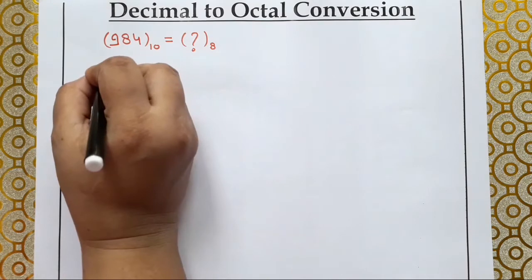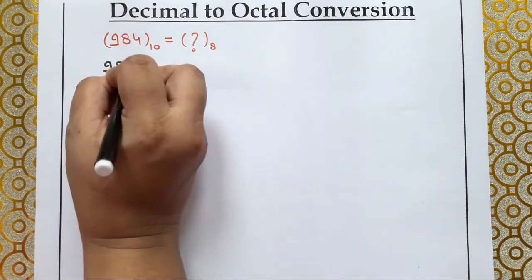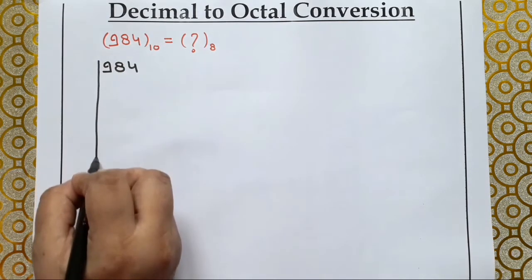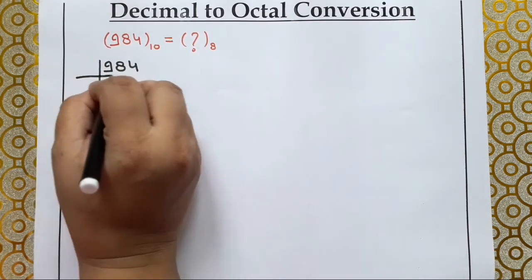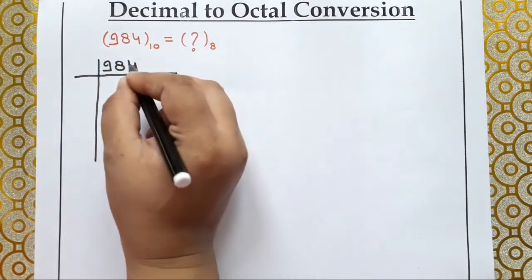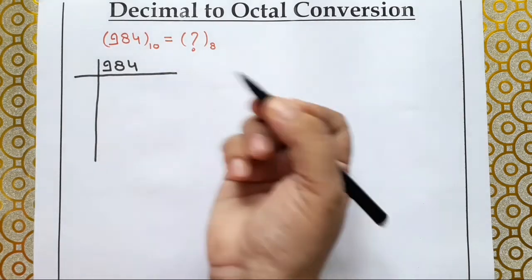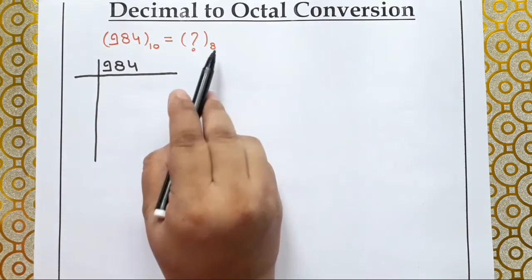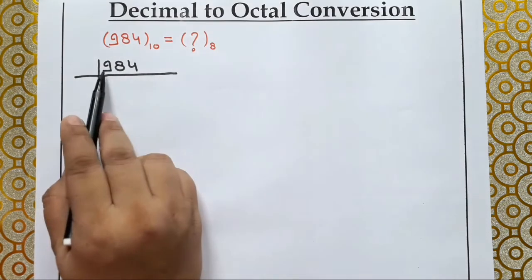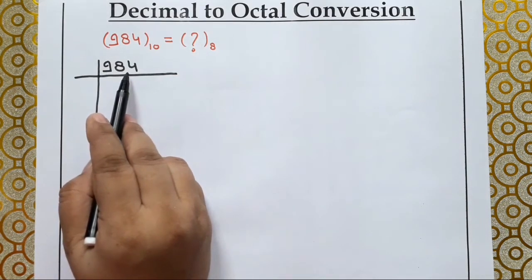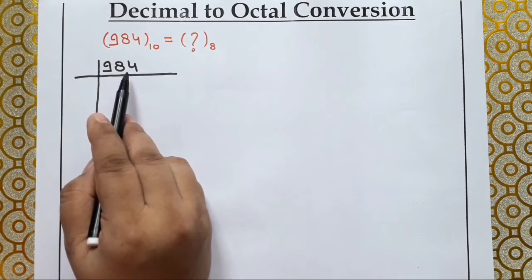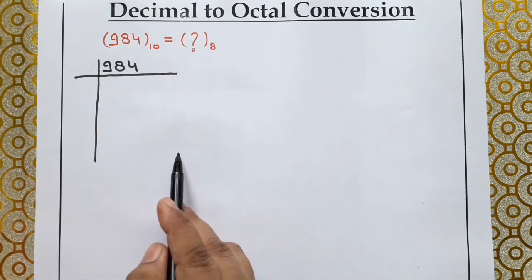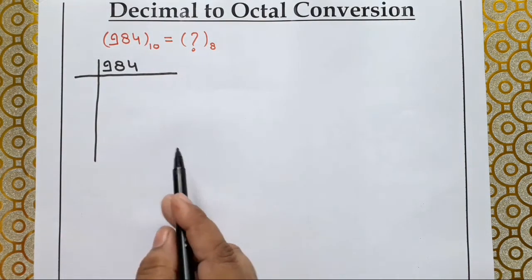Let's see how to find it out. The method is the same as what we used for decimal to binary conversion. We start by dividing the number. Since we know that the base of the octal number system is 8, we will divide this number by 8 and write the remainder values on the right side. So let's start the division.